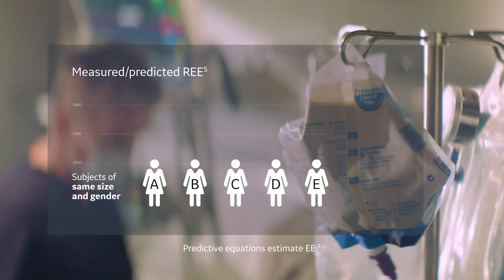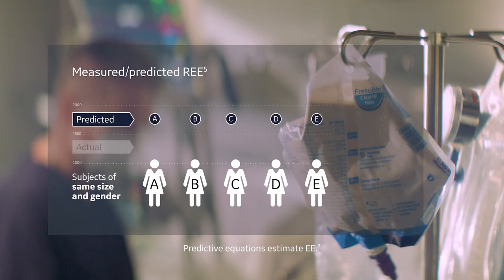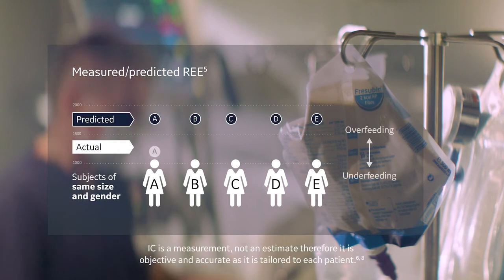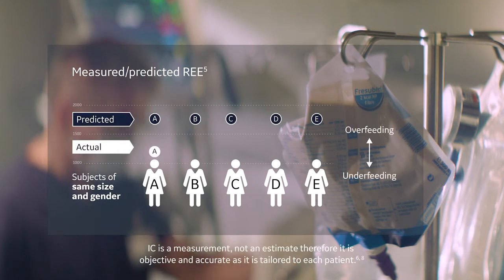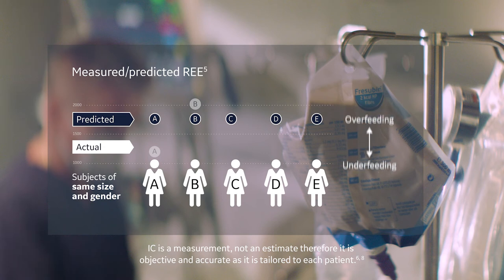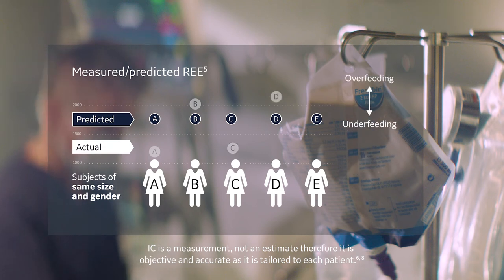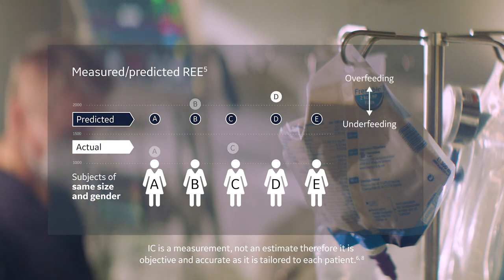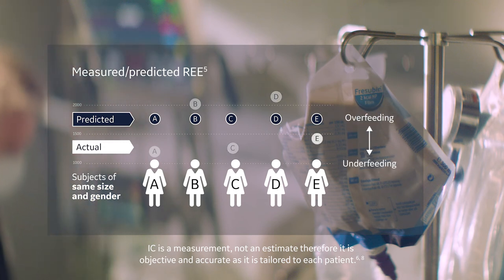Predictive equations estimate energy expenditure. Indirect calorimetry is a measurement, not an estimate. Therefore, it is objective and accurate as it is tailored to each patient.